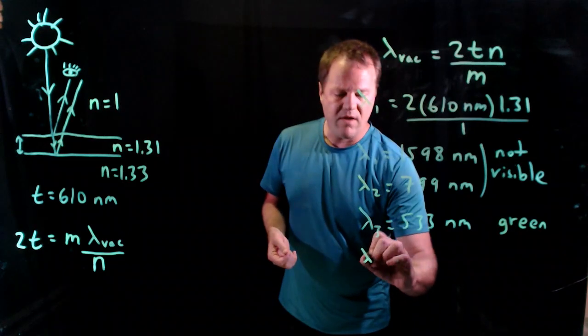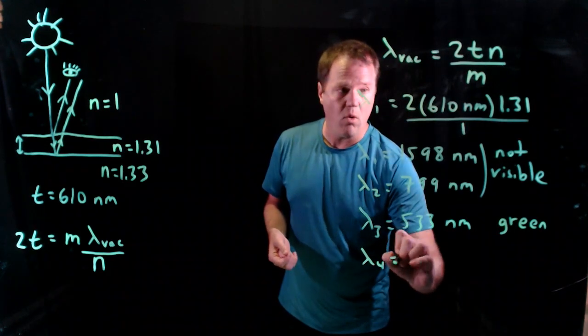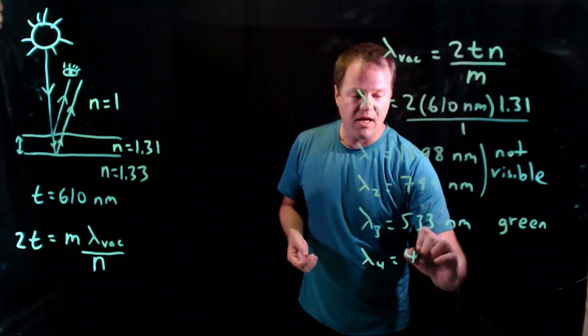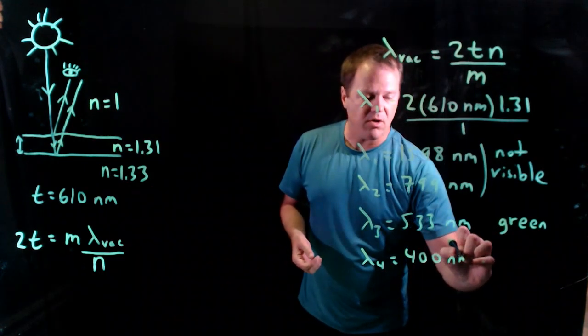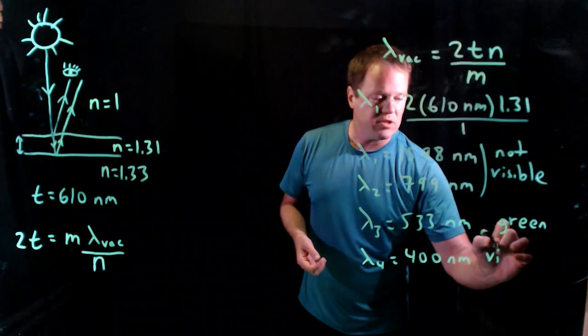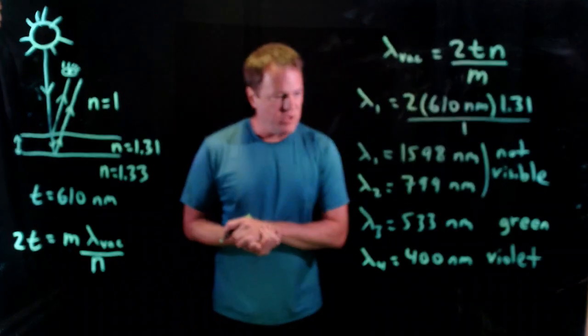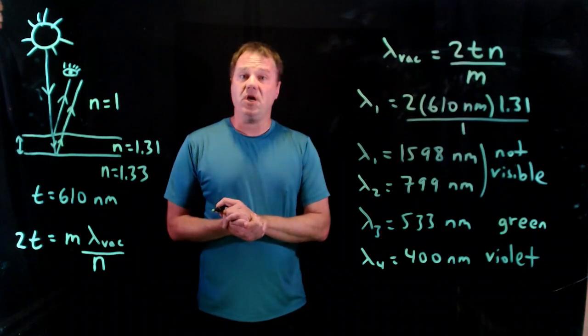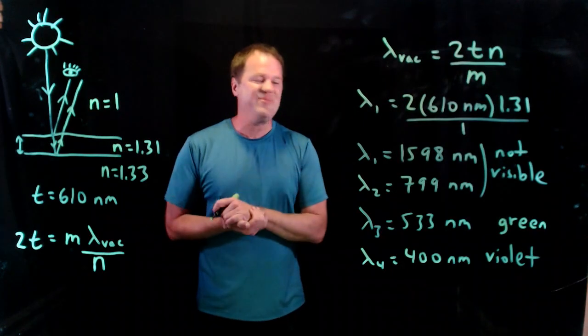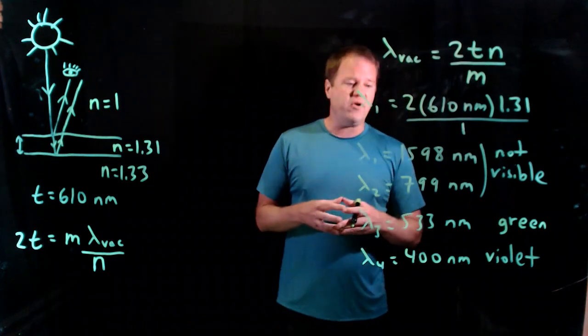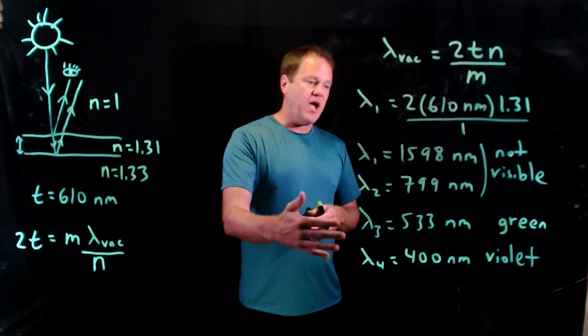Let's try a wavelength with m equals 4. So just basically the numerator is staying the same. I'm just changing the denominator and I get 400. So that's just on the boundary of human vision, roughly the shortest wavelength we can see, which our brain would associate with a color violet. So for constructive interference we would see violet and green.